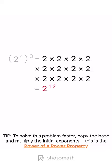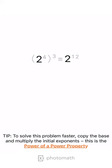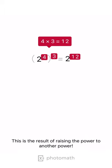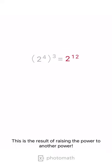Tip! To solve this problem faster, copy the base and multiply the initial exponents. This is the power of a power property. This is the result of raising the power to another power — the power of a power of a power.